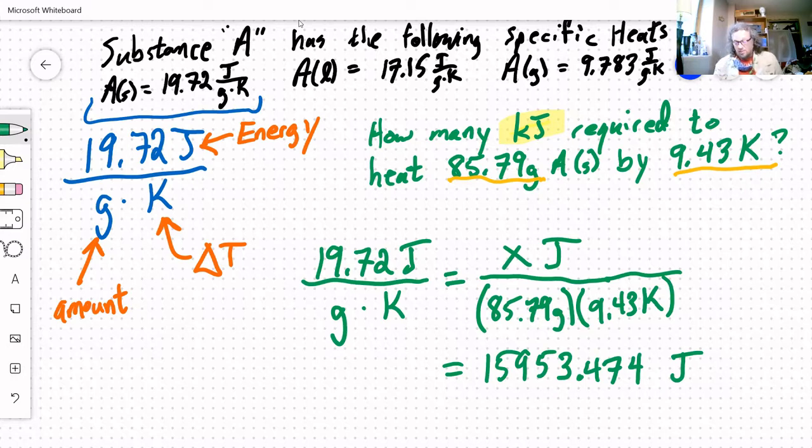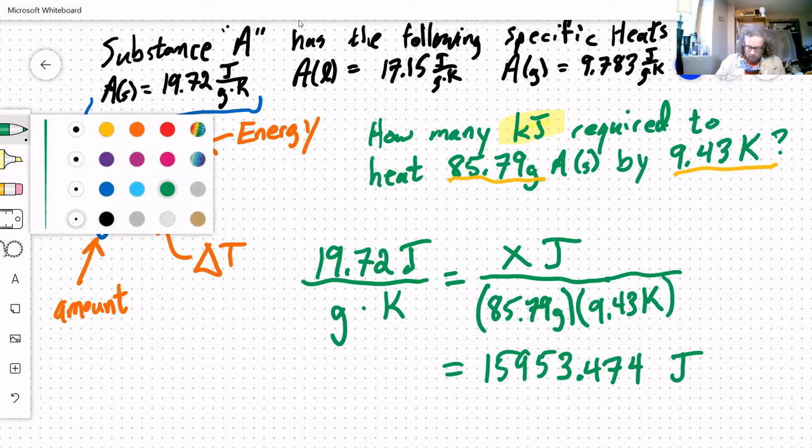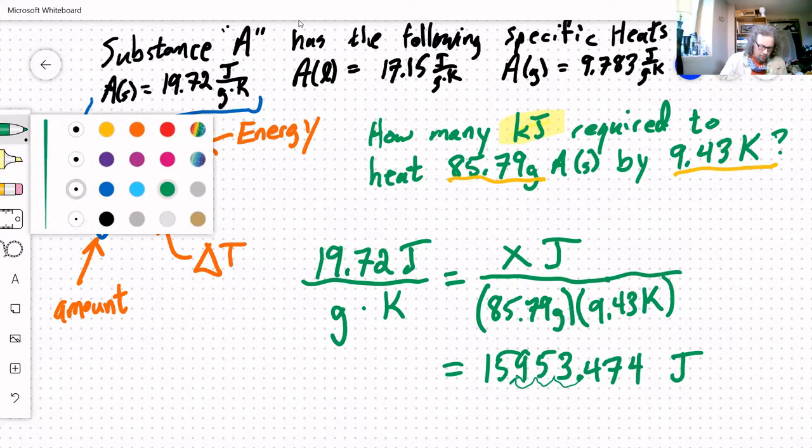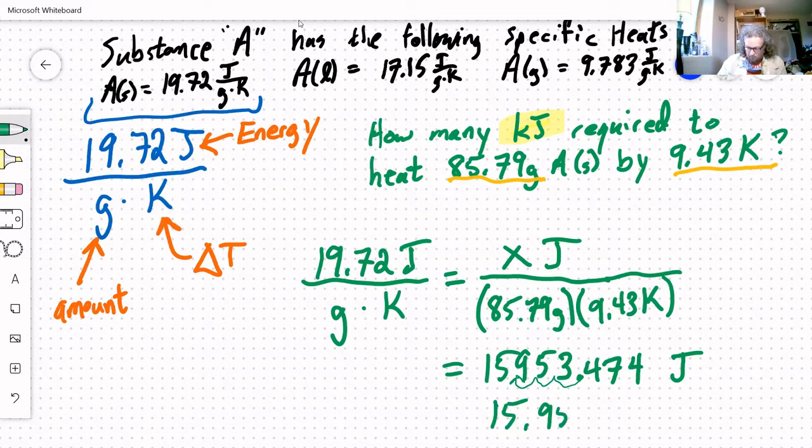So a couple things before we move on from this. Number one, this is not the answer to the question in a couple of different ways. First way is we were asked for the value in kilojoules. So let's convert joules to kilojoules. That's just a kilo conversion, a straight metric conversion of moving the decimal place. So kilo is one, two, three decimals in that direction. So this is 15.953474 kilojoules.